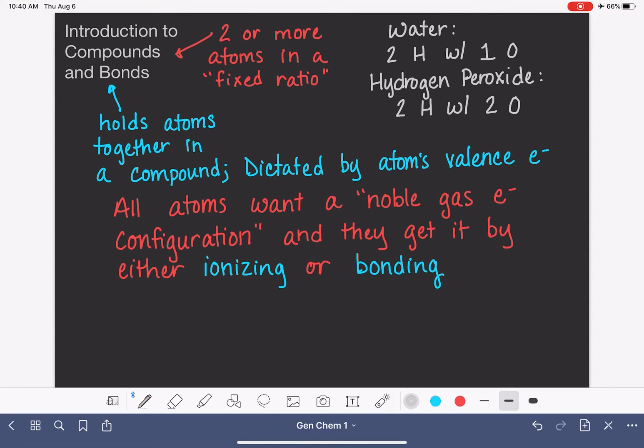Ionizing, let's just put a definition down here. This is what we've seen before. This is where they are gaining or losing electrons to form ions, cations or anions.